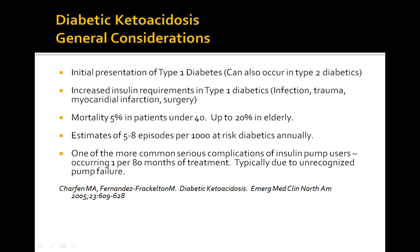It is estimated that 5–8 episodes per thousand diabetics occur annually. One of the more common serious complications is seen in insulin pump users who typically have unrecognized pump failure, with approximately 1 per 80 months of treatment experiencing this as a cause of DKA.